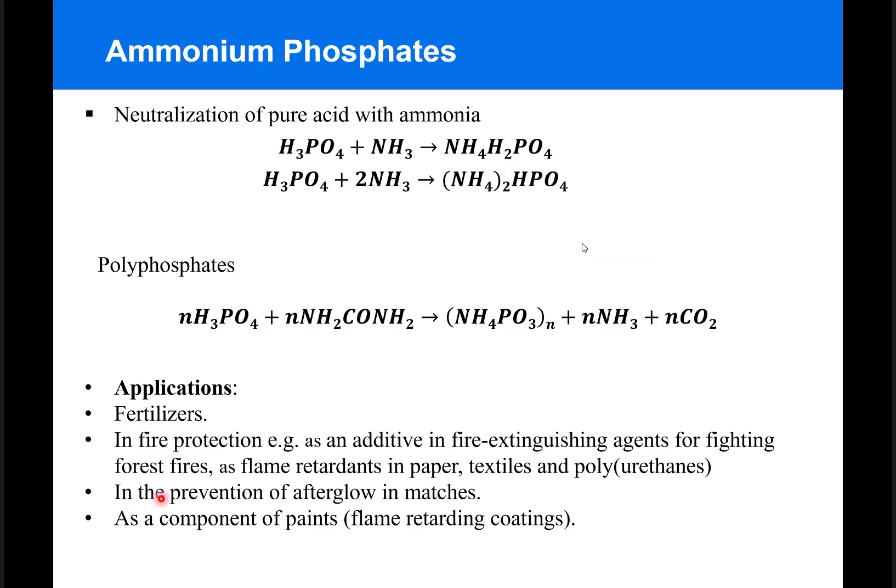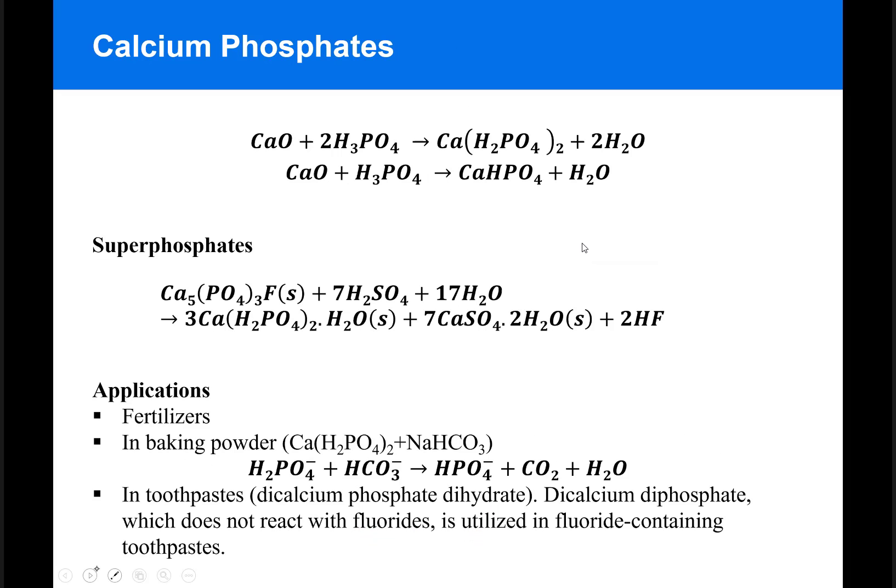It's also used in the prevention of afterglow in matches and as a component of paints as a flame retardant coating. The third category of industrial phosphates include the calcium phosphates.